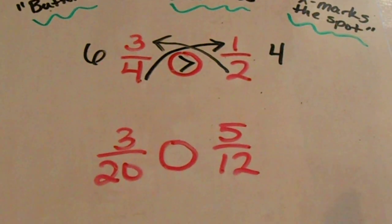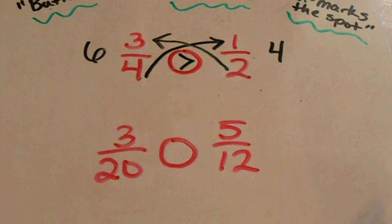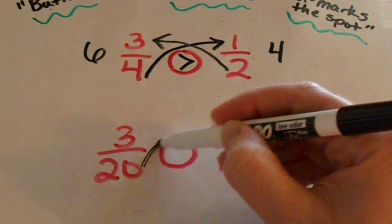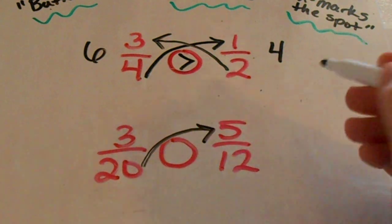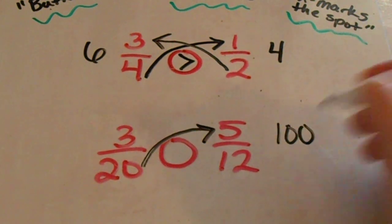Let's try another example. So down here we have three twentieths and five twelfths. Again, I'm going to start at the bottom, cross over to the top. Twenty times five is one hundred, I'm going to write that over here to the right hand side.